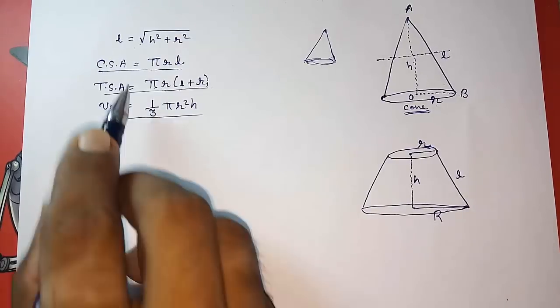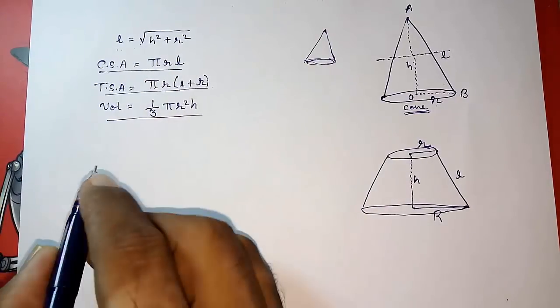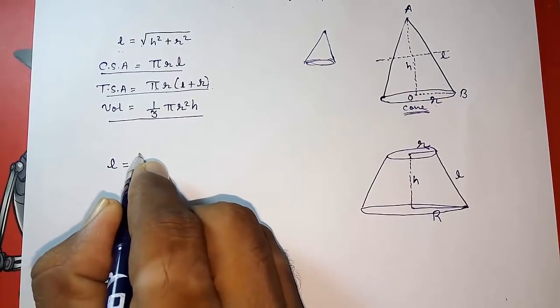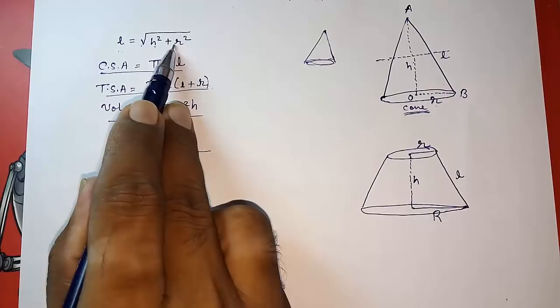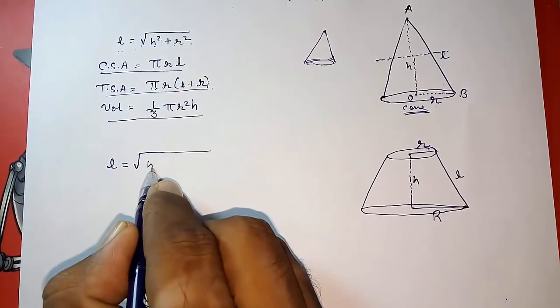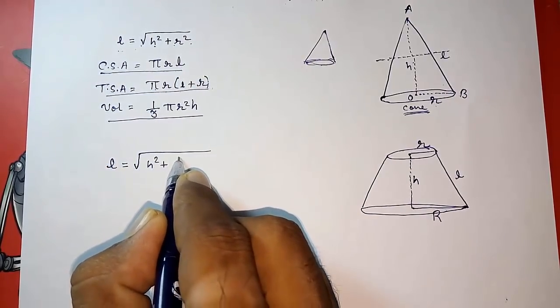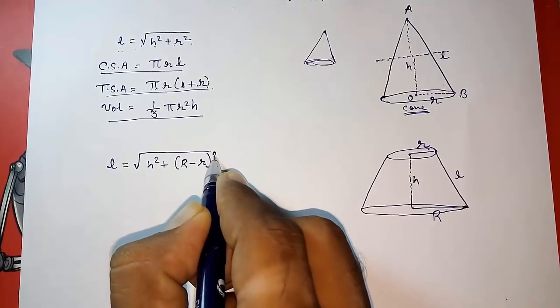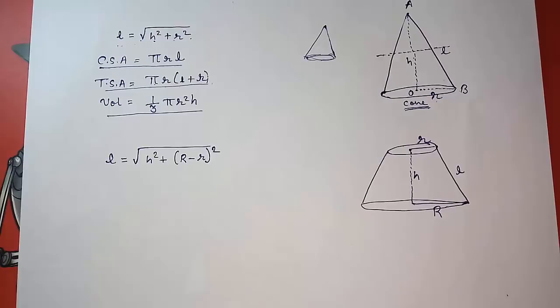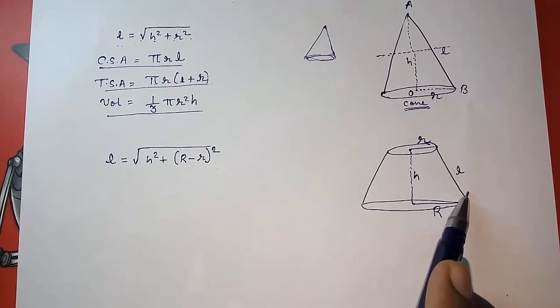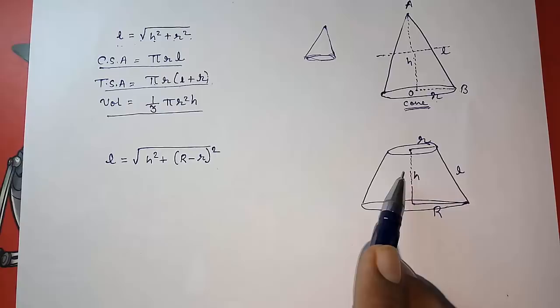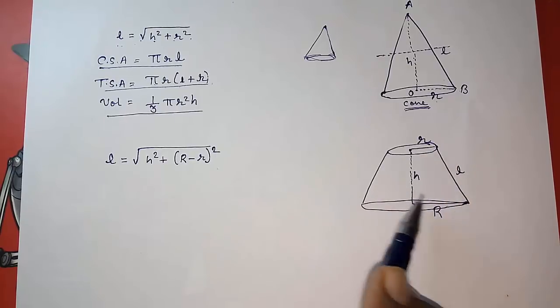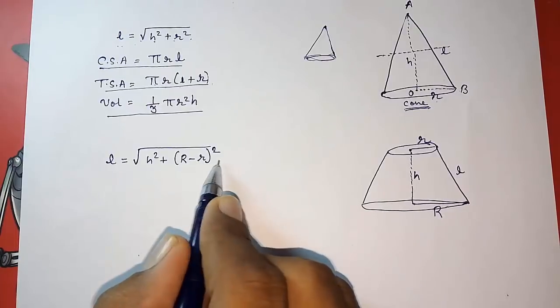Now first I will tell you about L, how we can find L here. L will be equal to under root, here it was h square plus r square directly, but here we are having two r, so what we are going to do: capital R minus small r whole square. This is the formula for finding slant height. If any three is given to you, you can find the fourth thing out of this four.